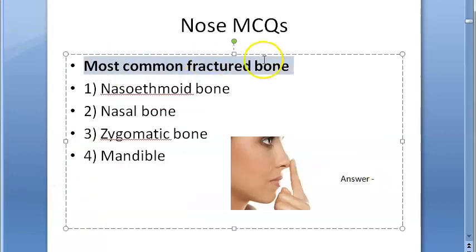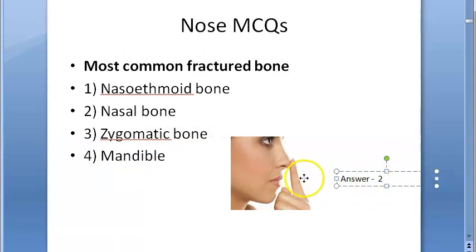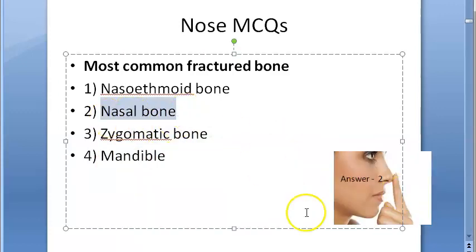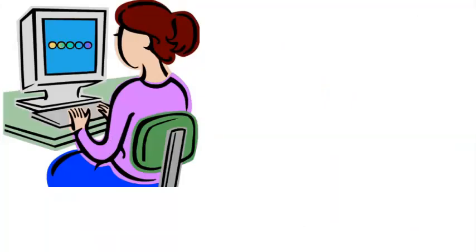Most commonly fractured bone — the options are nasoethmoid bone, nasal bone, zygomatic bone, and mandible. The answer is nasal bone. As we studied in nasal fractures, the nose is projecting outward, so it is more prone to trauma — hence the nasal bone is most fractured.